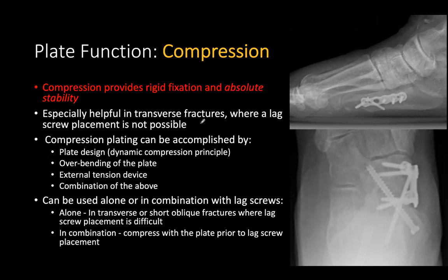Compression plates provide rigid fixation and absolute stability. They're very helpful for transverse fractures where lag screw placement is impossible — such as high PER or midshaft PER fractures. Compression can be accomplished by plate design through the dynamic compression principle built into the plate, by overbending the plate so it compresses when applied to bone, or by using an external tension device such as a Hintermann or reverse Hintermann.